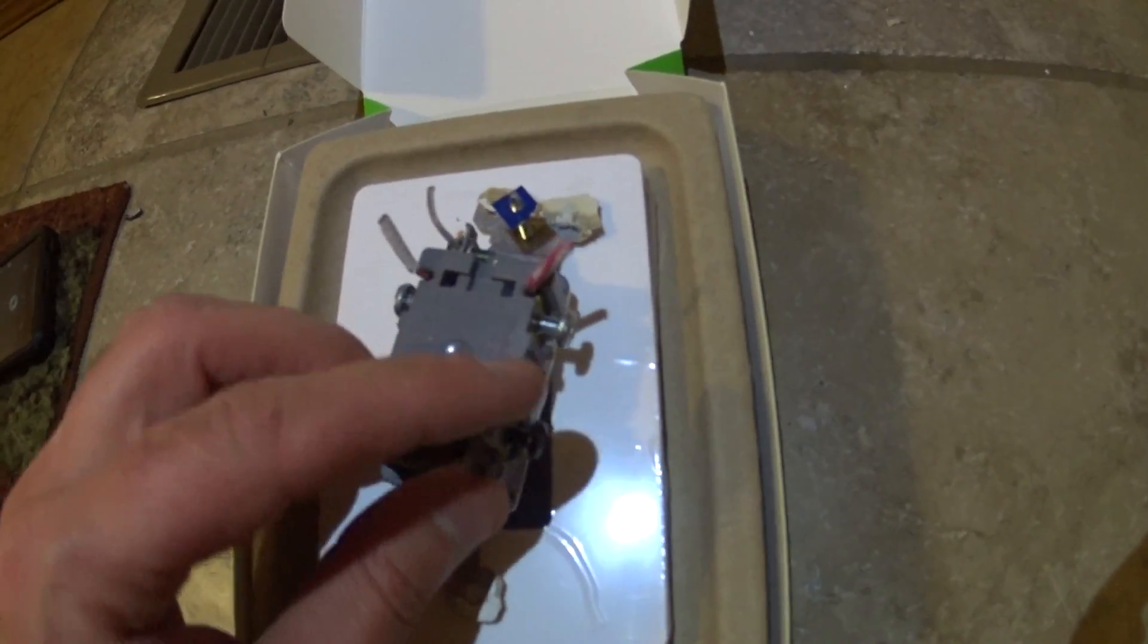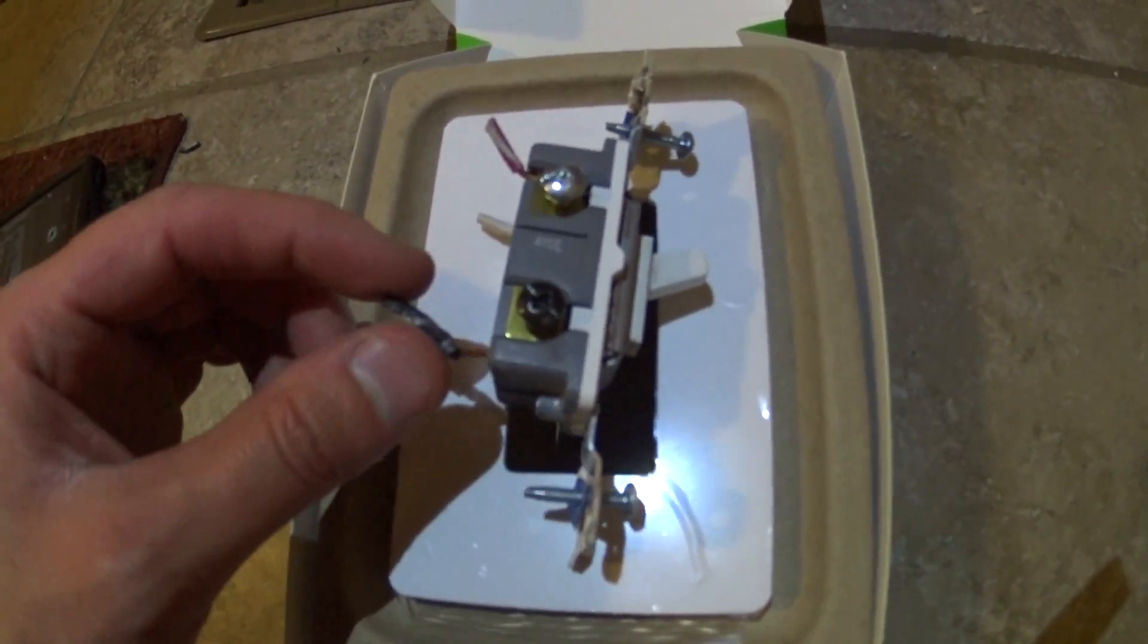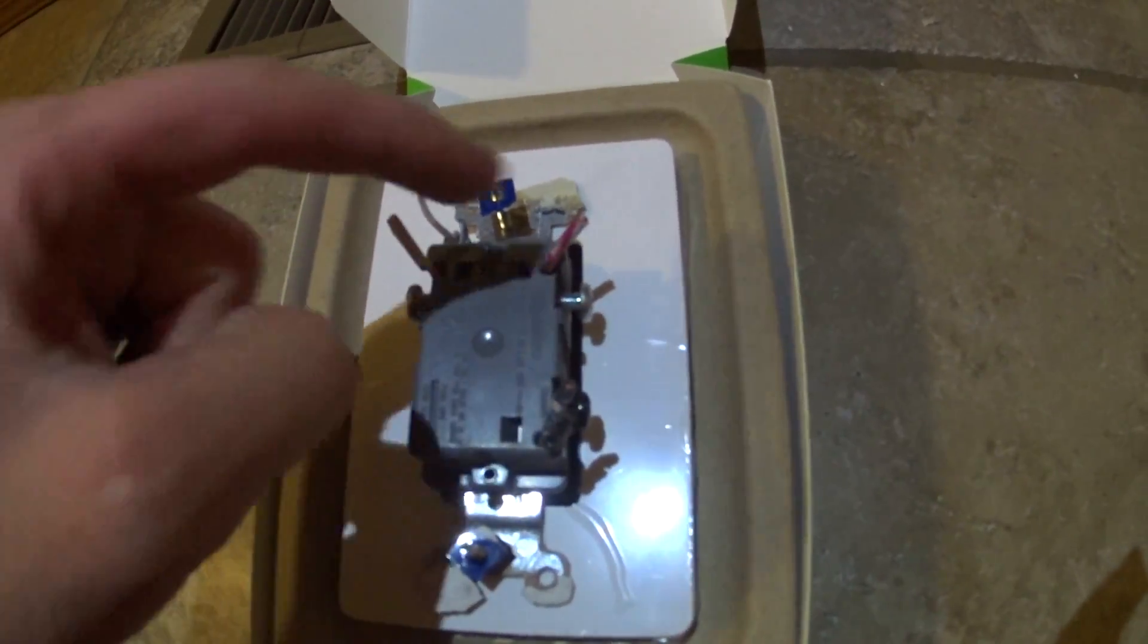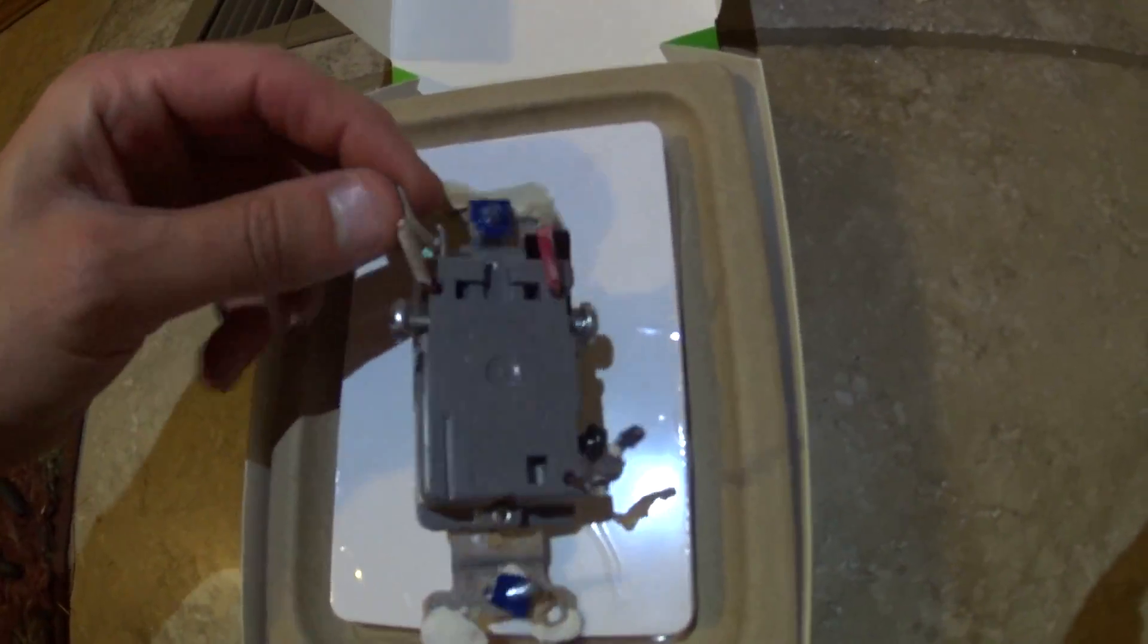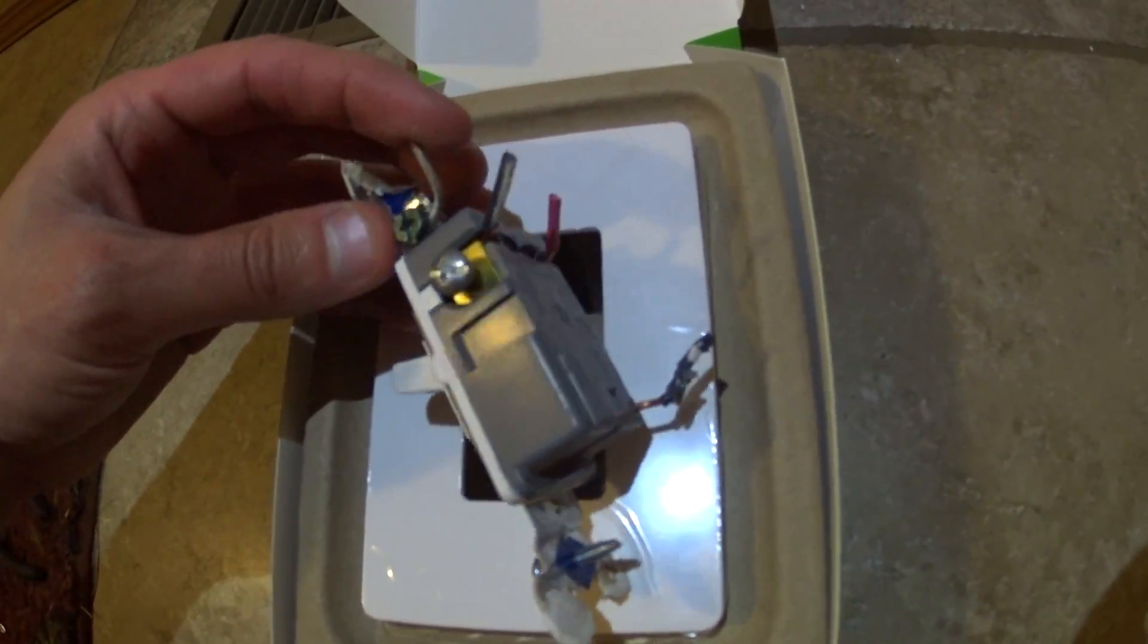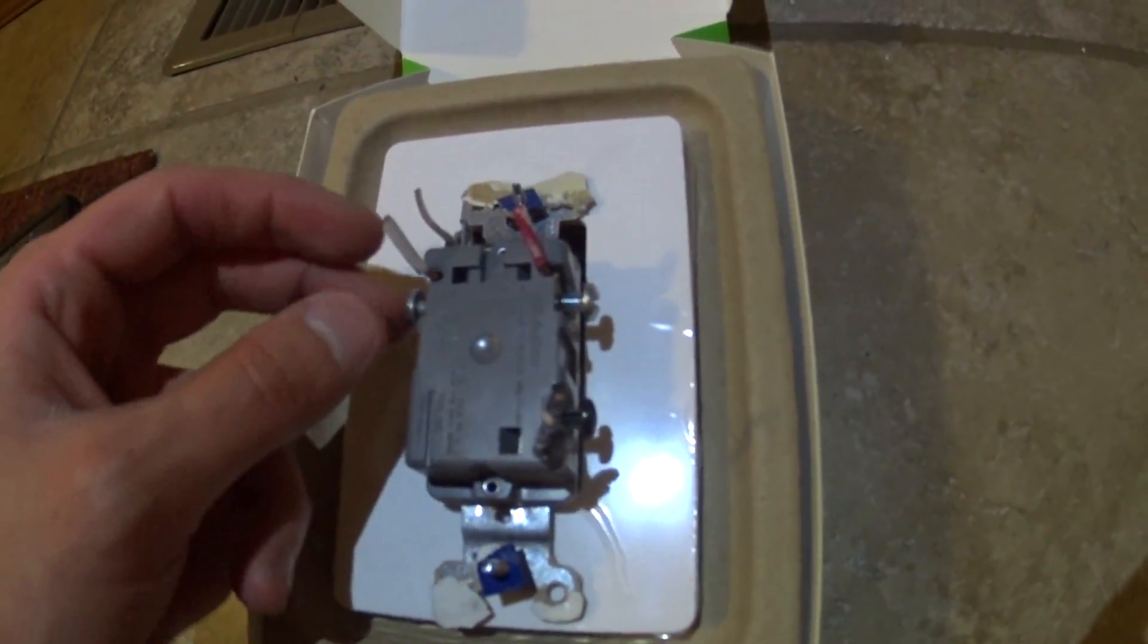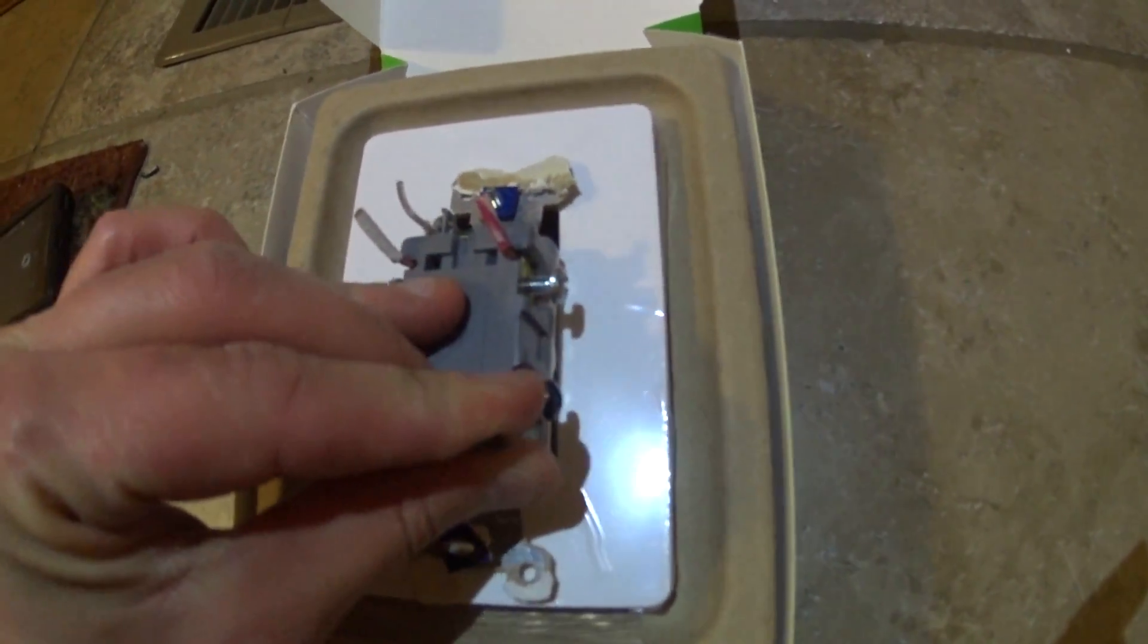You have your line voltage or your hot, and then these two are called travelers, and you have your ground. I'm not an electrician by any means, so I may have some of these terms incorrect.